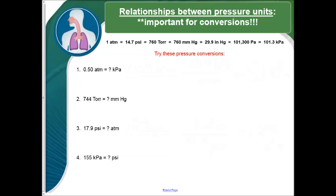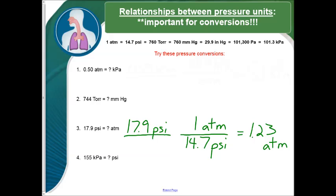Now for the next one, number three, we're converting from psi to atmosphere. So we start with 17.9 psi, and we look up at the top. We have 14.7 psi is equal to one atmosphere. When we do the math on this one, we get 1.23 atmospheres.